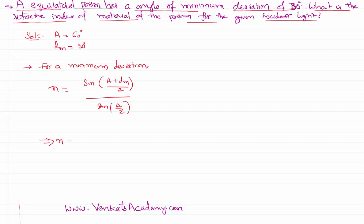I need to calculate refractive index. Sin, angle of the prism is 60, minimum deviation is given to us as 30, by 2, by sin 60 by 2.